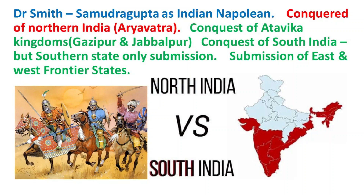Then he started the conquest of Attawika, which were kingdoms of Ghazipur and Jabalpur. Then he started the conquest of Southern India and conquered all the Satraps states, but he did not annex these states within his empire — he only made them submitted or dominion states. These Satraps states or kingdoms were semi-independent in the Gupta Empire.